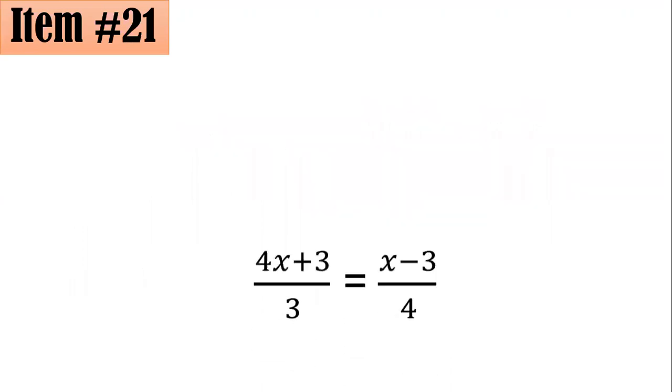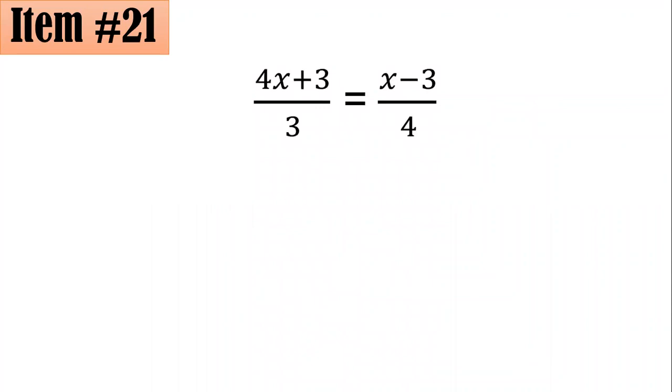Okay, so for this one, we will employ the multiplication property of equality. Others call it cross multiplication. So we will multiply 4x + 3 with 4 and 3 with x - 3. So for that, you have 4(4x + 3) = 3(x - 3).